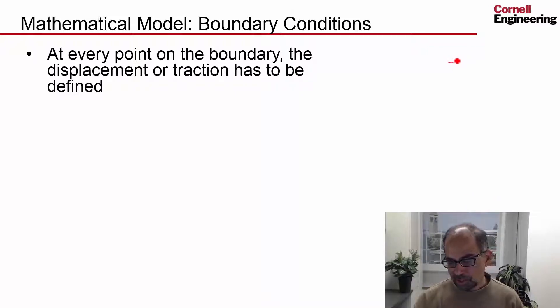This is analogous to our 1D conduction example where we had to specify either the temperature or the flux, which set the gradient of the temperature. So the displacement looks like that and the traction looks like that.